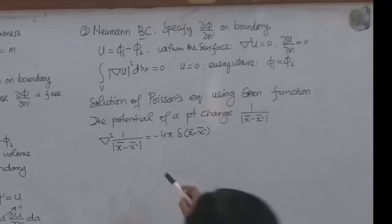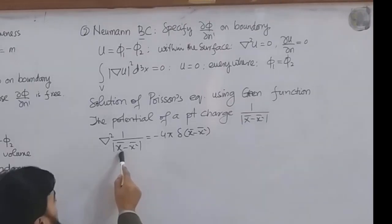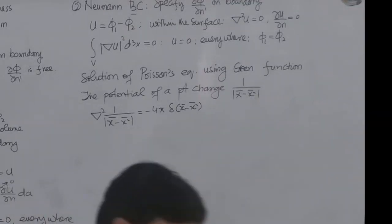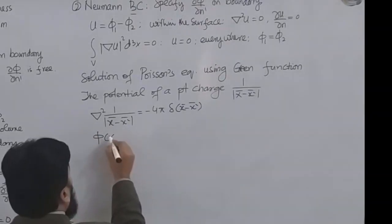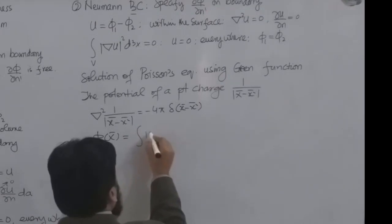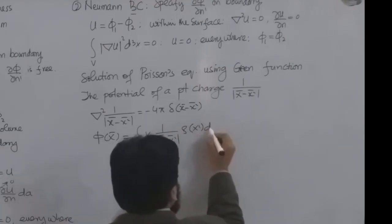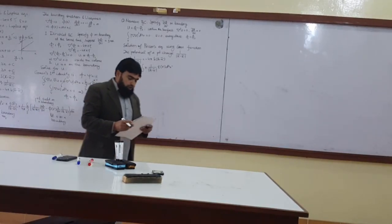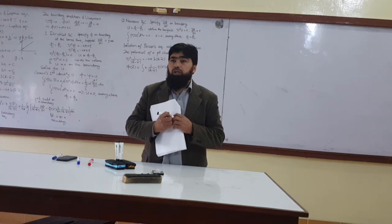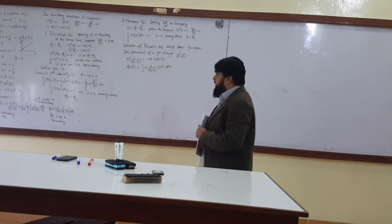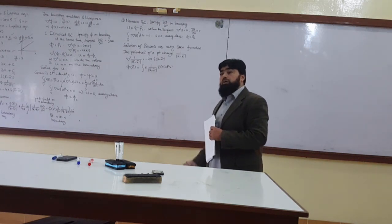We say that ∇²(1/|x - x'|) is rather a special function because it is the potential of a point charge and it is equal to a delta function. If the distribution of charges is given to us, then φ(x) is equal to the integral of k · (1/|x - x'|) · ρ(x') d³x'. The potential is given by the distribution of charges, and this is a very special — indeed incredible — equation: the potential of a point charge.